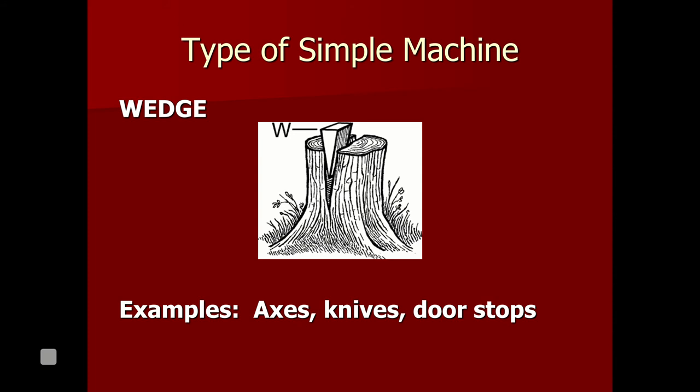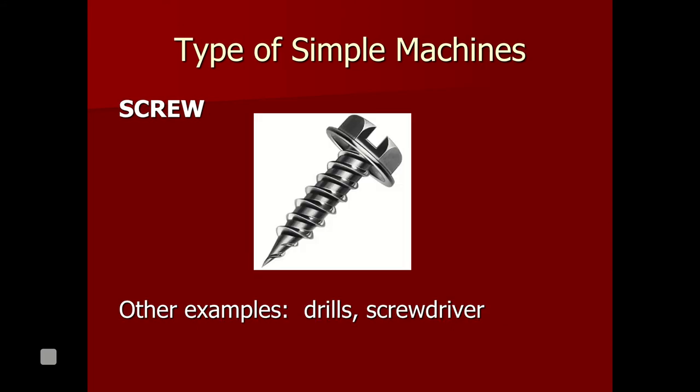A wedge — axes, knives, doorstops, things like that — helps change the direction of the force. If you're trying to split wood, you can try to pull both sides apart, but that's never going to work. Instead, you apply a force straight down with a wedge, and the wedge creates a force to the sides. There are also screws — another type of simple machine — doing a small change in distance while creating a larger change in distance around it, which helps keep the object in place.